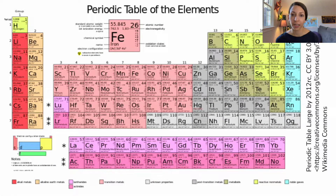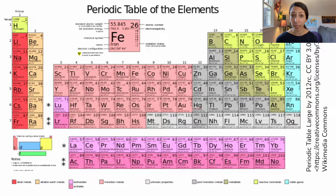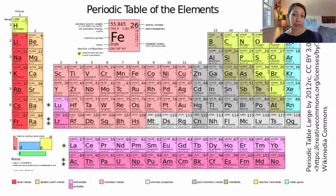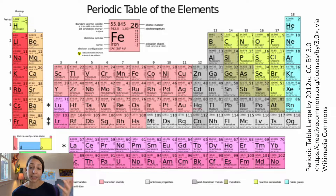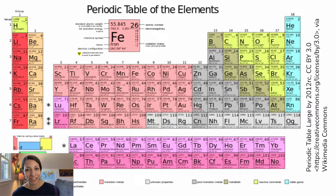Let's take a quick look at the periodic table. You're not going to use this too much in biology, but it is a useful resource to identify different elements and their chemical properties based on their atomic number and electron configuration. Each element has a symbol that is universal, so N is always nitrogen, no matter what language you're speaking.